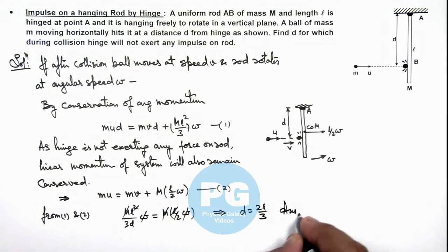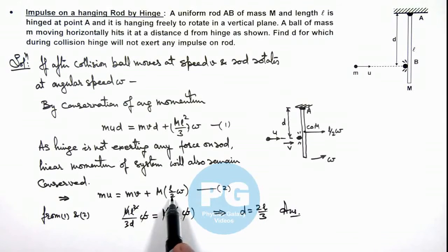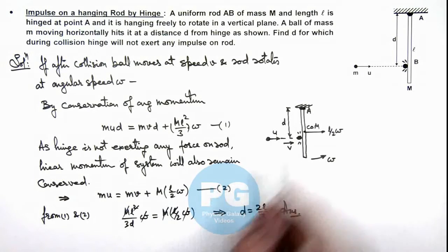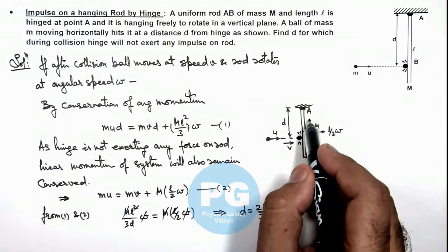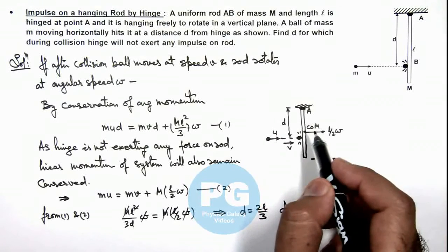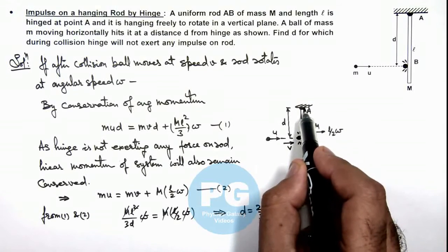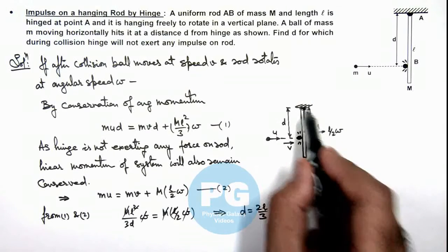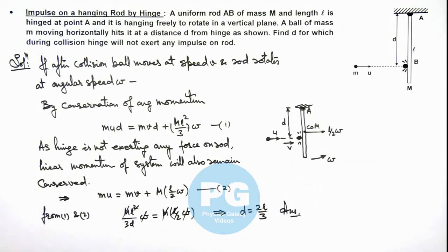That is the result of this problem, and this is the value of d for which the angular momentum and linear momentum both will remain conserved. And linear momentum conservation implies hinge is not exerting any force on the rod in horizontal direction. As in actual cases, if ball will hit anywhere else, hinge will exert a horizontal force on rod due to which its linear momentum will not remain conserved. So here our result will be 2 l by 3.